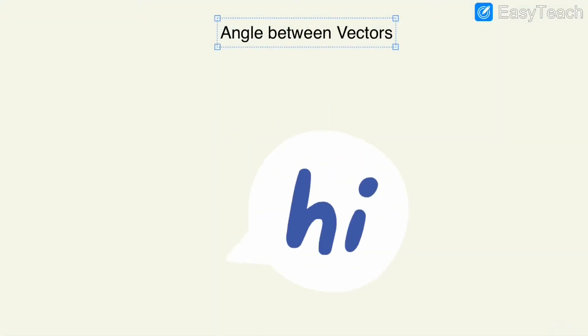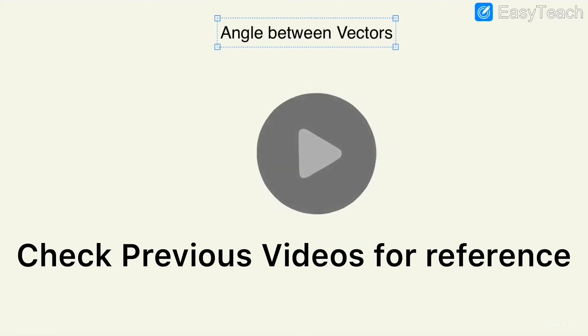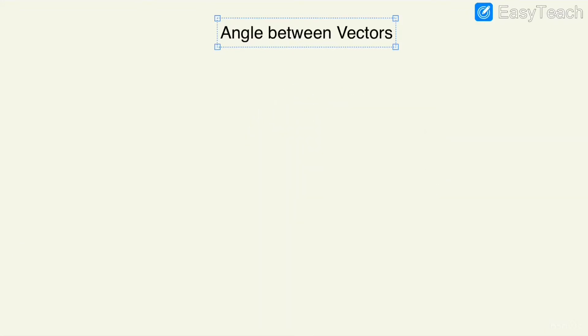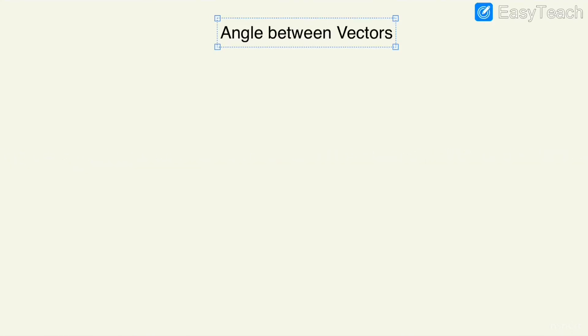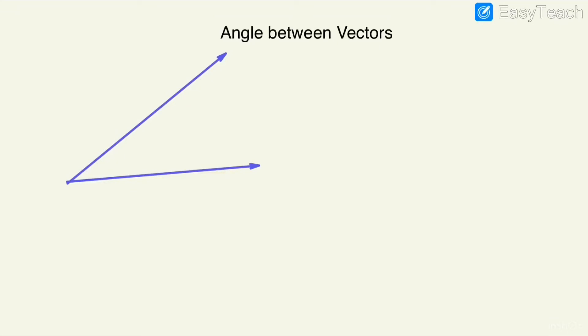Hey, hello guys, welcome to another class of this phenomenal physics series where we are discussing about vectors. In the last class we learned how to find the magnitude and angle of the resultant if we know the magnitudes of the individual vectors and the angle between the vectors. Now, let me draw two vectors — vector A and vector B — brought into common tail configuration.